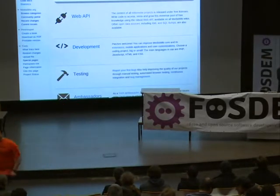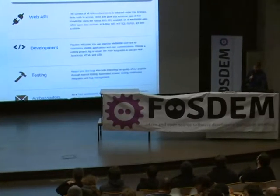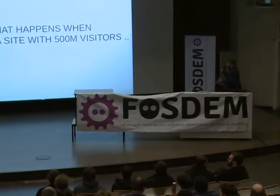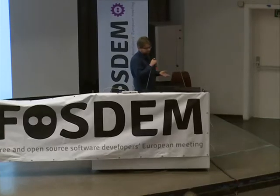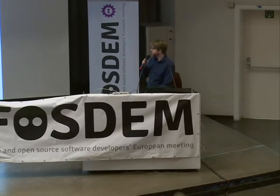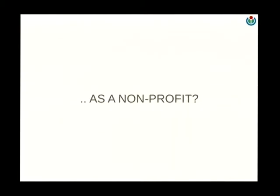Can you hear me okay in the back? I'm going to start with a question. If you imagine most of the big websites — Facebook, Yahoo, etc. — there's a bunch of important differences to Wikipedia. What happens if you run a site at that scale using only free software, no proprietary bits, with a commitment to transparency and user privacy, very different values, and a commitment also to being collaborative in partnership with the community in everything we do as a non-profit organization?